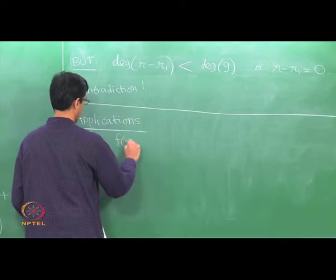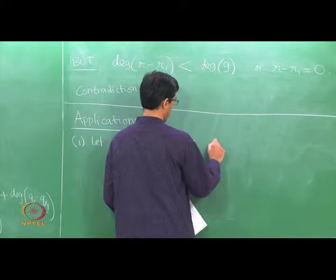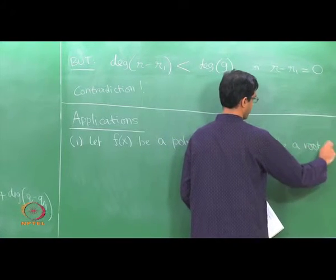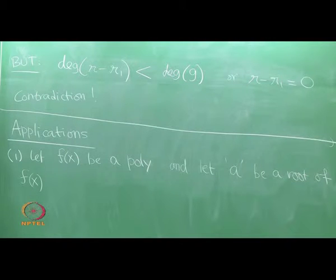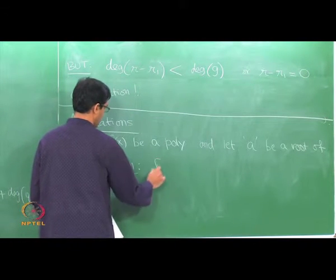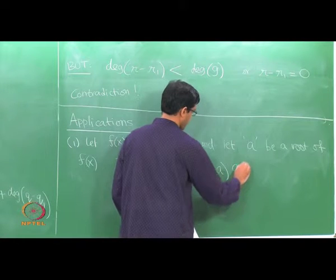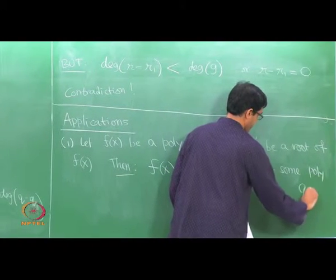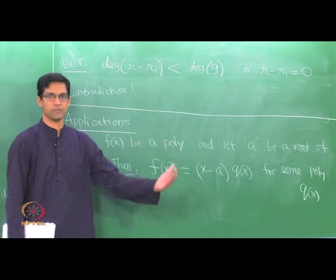Let f(x) be a polynomial and let a be a root of f(x). Here a is a number — you could assume it is a real number or a complex number. If a is a root of f(x), then f(x) can actually be written as (x − a) times some other polynomial q(x). In other words, if f(a) = 0, then f can always be written as (x − a) times something; it is a multiple of (x − a).